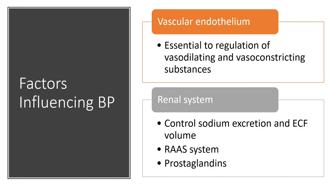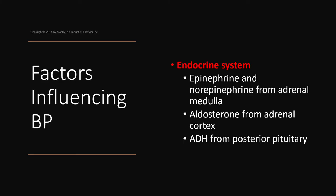Sympathetic nervous stimulation causes the kidneys to secrete renin. The renin-angiotensin-aldosterone system (RAAS) ultimately leads to blood pressure increase. We work on the RAAS system with an ACE inhibitor to prevent the conversion from angiotensin I to angiotensin II, thereby lowering blood pressure.